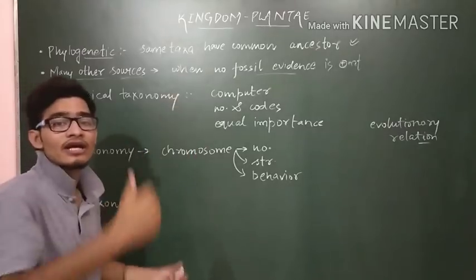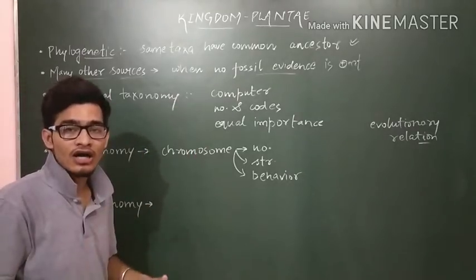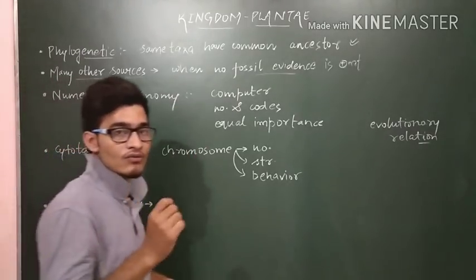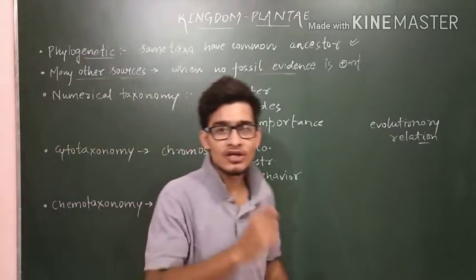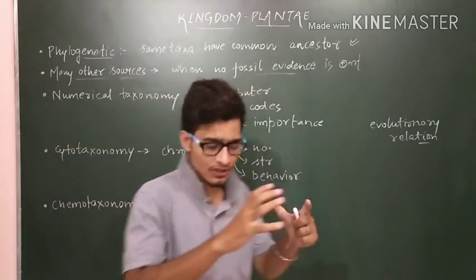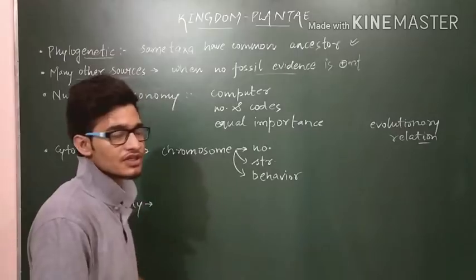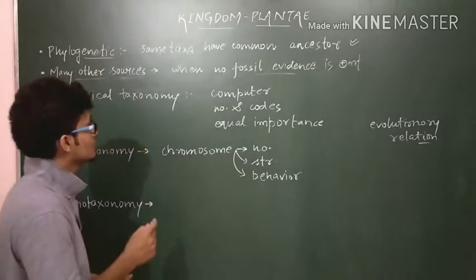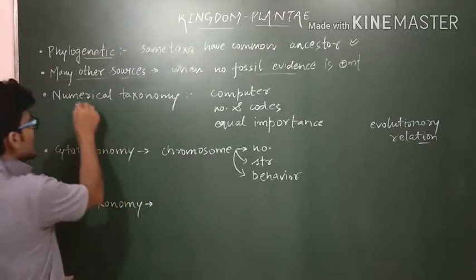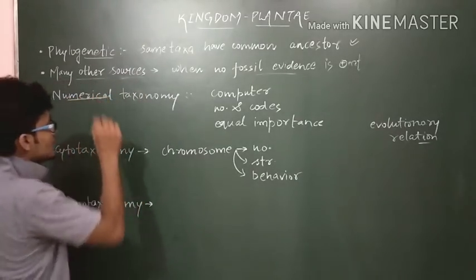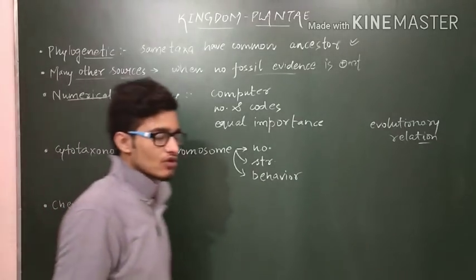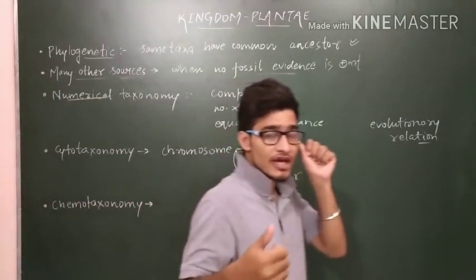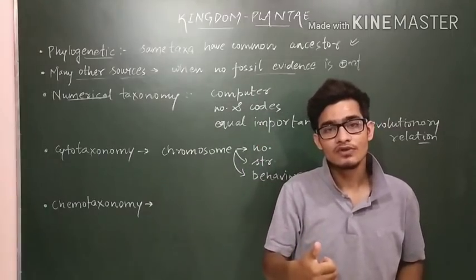So there must be more than one character that is very important and crucial for the proper classification of an individual. Then there is numerical taxonomy — as the name indicates, it is based on numbers.